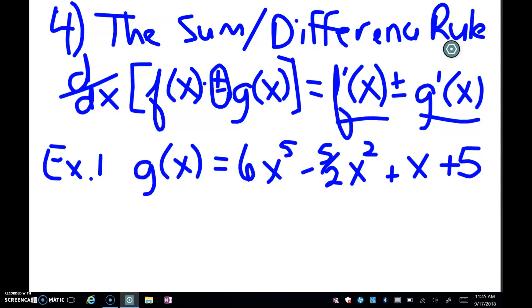For example, here we have g(x) = 6x^5 - 5/2x^2 + x + 5. If we do the derivative of each term then, starting with 6x to the fifth, I'm applying that constant multiple rule, bringing the 5 down.